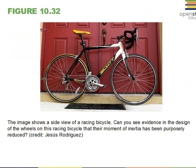Competition bicycles are made with a low value of I to reduce the kinetic energy tied up in rotational kinetic energy. Instead, when riders pump the pedals, they want the energy to go into one-half mv squared — the linear kinetic energy.